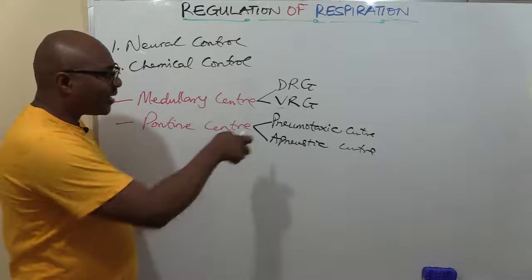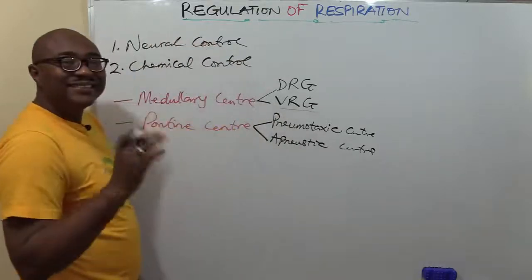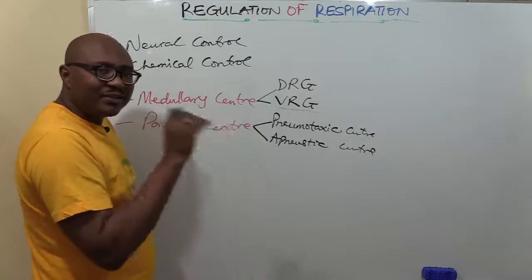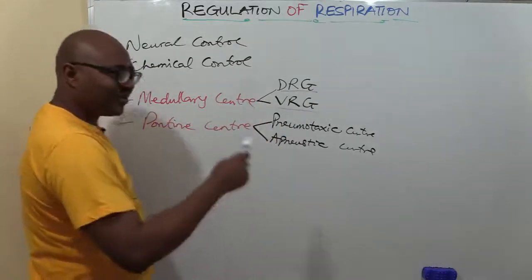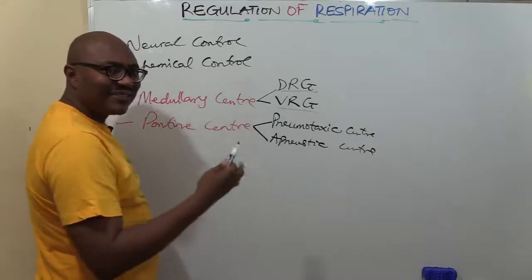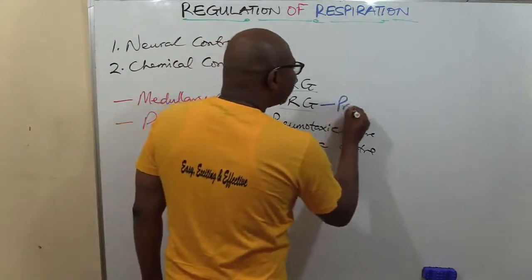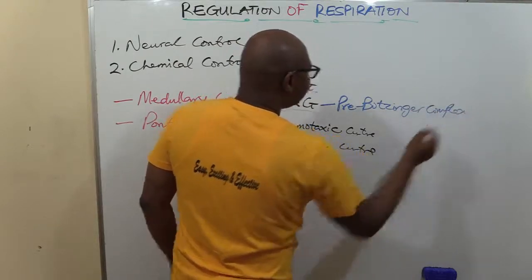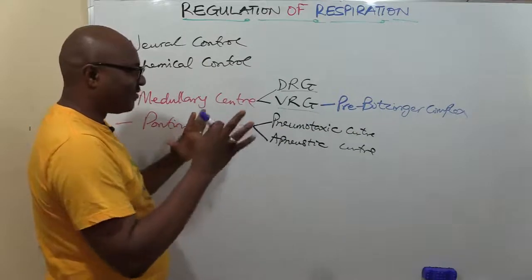The VRG has another function: it houses the pacemaker cells that continuously fire to make respiration a continuous process. They send signals to the DRG, which handles the active work of inspiration, continuously at a normal respiratory rate of around 12 to 16 breaths per minute. These pacemaker cells are located in a region called the pre-Bötzinger complex, which is specifically responsible for controlling continuous breathing at rest.